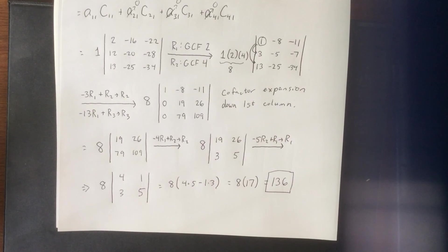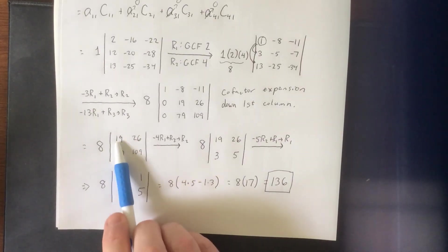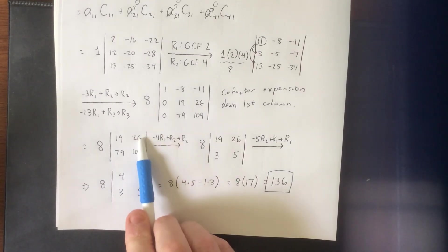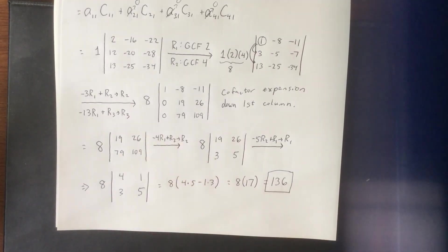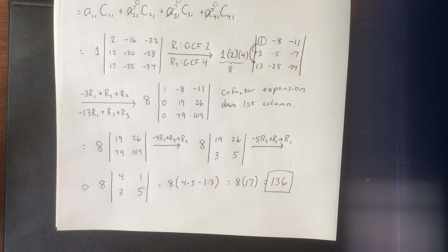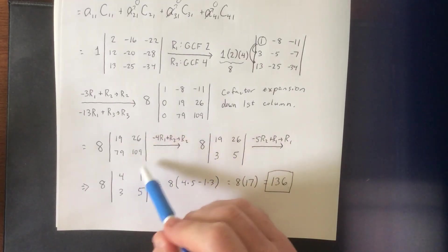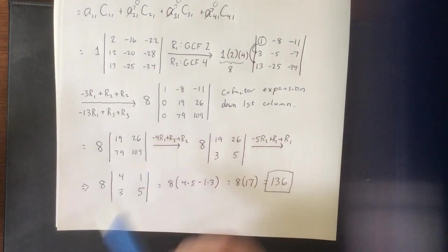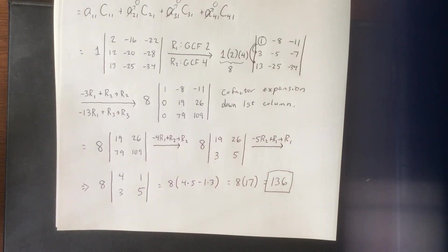A lot of those steps at the end were completely optional. If you felt like multiplying 19×109 and subtracting 26×79 with a good calculator, you're welcome to do so. I just want students to know how to make these numbers less intimidating, especially once they get really big like this. Hopefully you were able to take a lot out of this example.